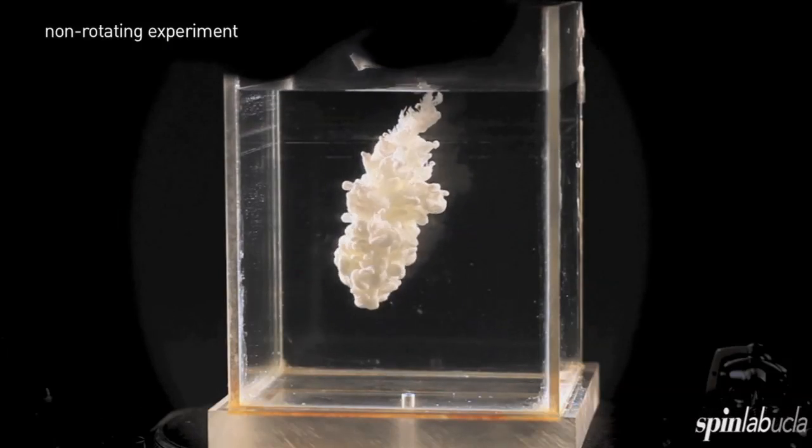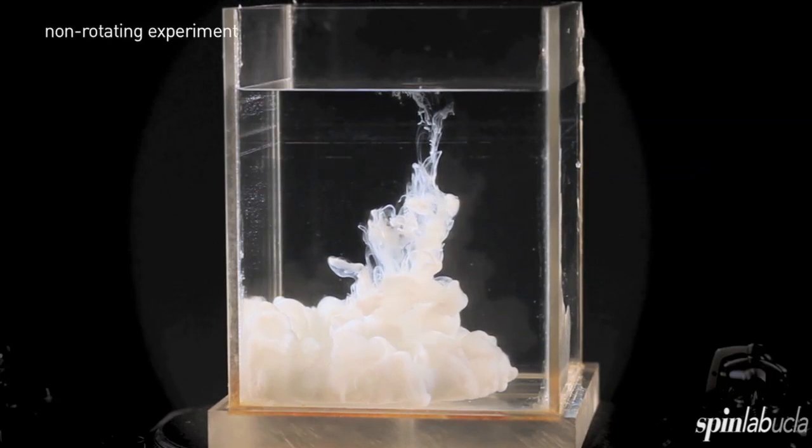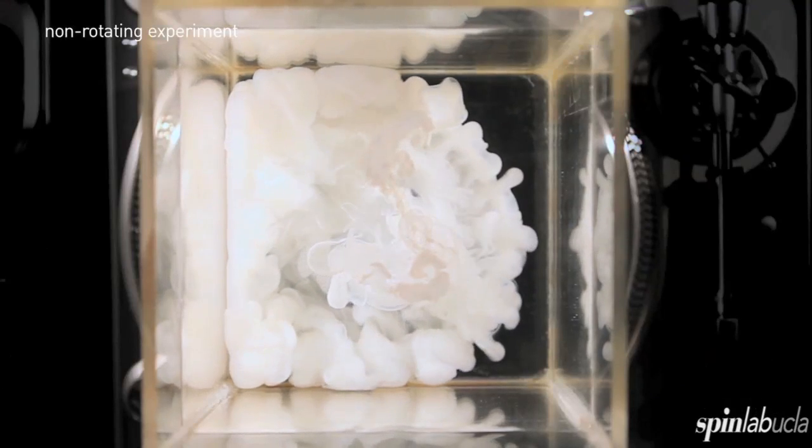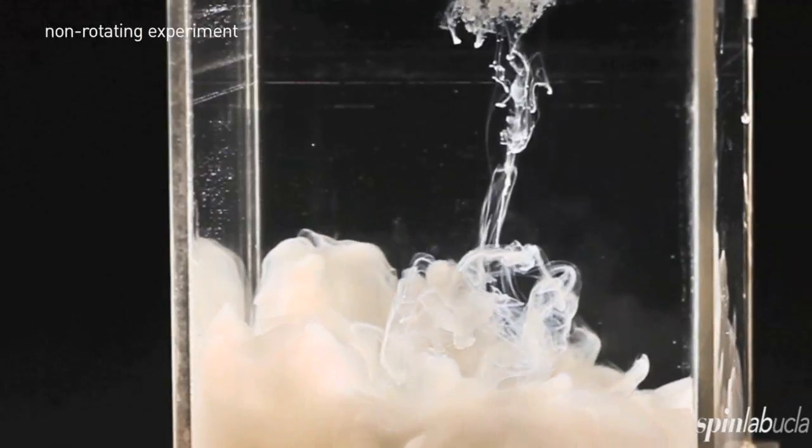And what you see is that the creamer quickly falls through, forming a dense turbulent plume, hits the bottom and immediately spreads out. It looks somewhat like an inverted mushroom cloud because it is.